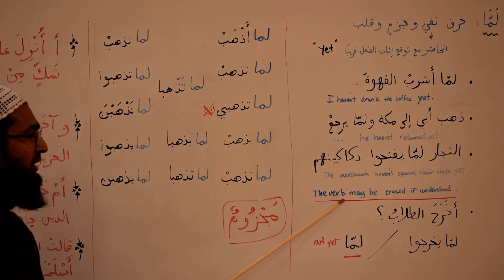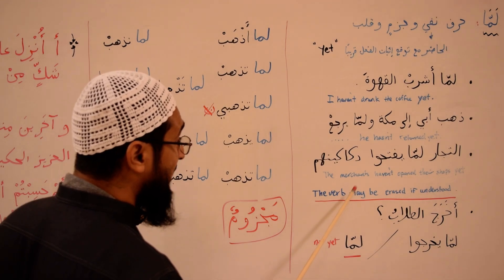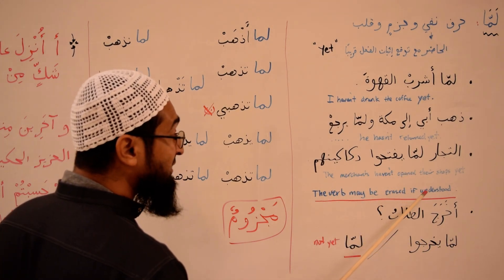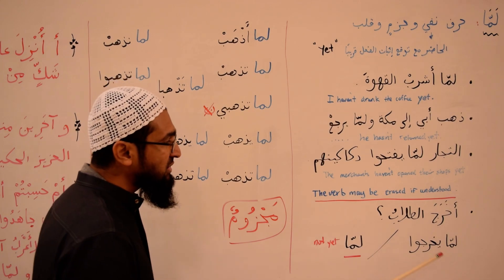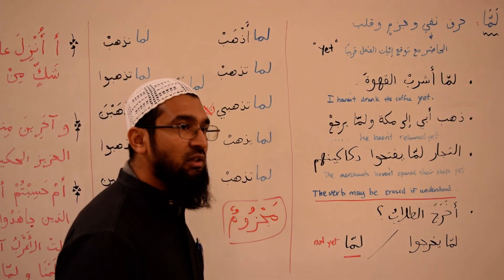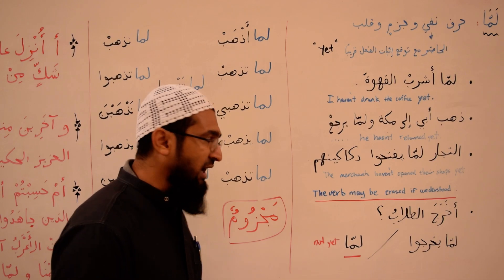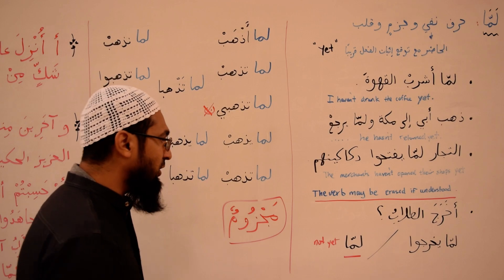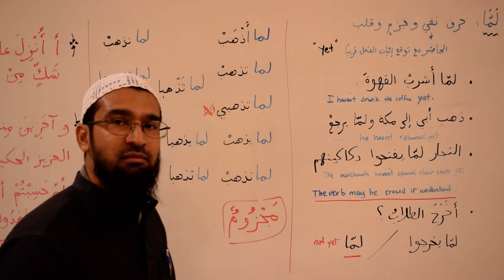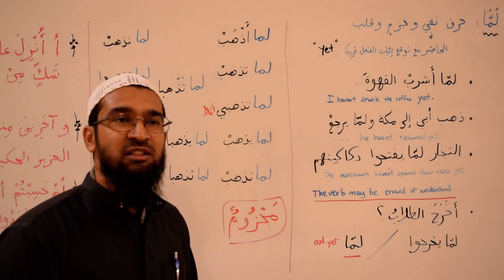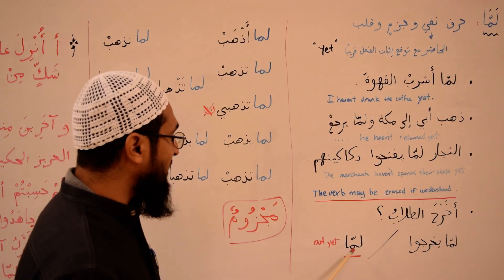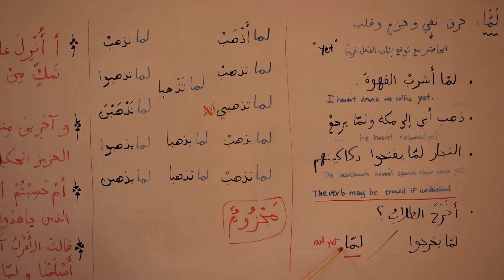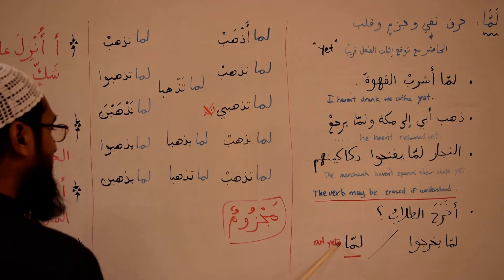The verb that becomes majzum may be erased if it's understood, like in a question. أخرج الطلاب — did the students exit? So you can say لما يخرجوا, they haven't exited yet, or just لما — not yet. This is a perfectly fine, complete sentence because we understand that it is referring to the verb خرج.